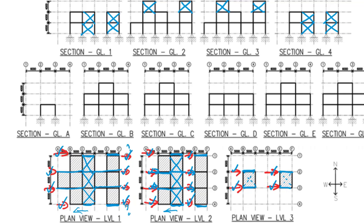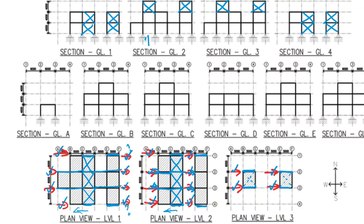Here you can see the vertical bracing added to the elevations on grid lines one, two, three, and four. Comparing to the floor plan layouts at levels one, two, and three - between grid lines one and two, the bracing has stepped between grid lines C-D and B-C. Normally it's better to have them at one consistent position, but stepping can occur for various reasons, for example if an architect requires a door at that location.